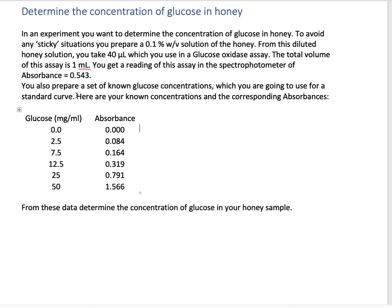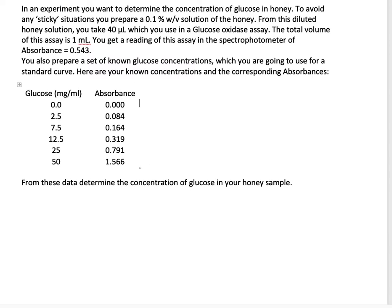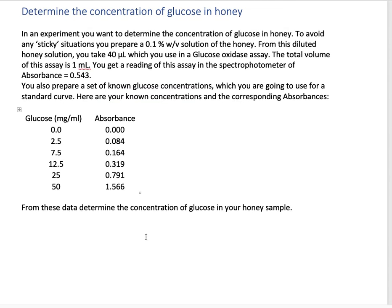We need to prepare a standard curve to determine what this absorbance tells us. We use known glucose concentrations in milligrams per milliliter and measure the corresponding absorbance in the same assay. From this, we can determine the actual glucose concentration in the honey sample.